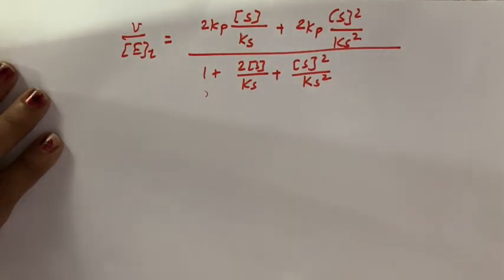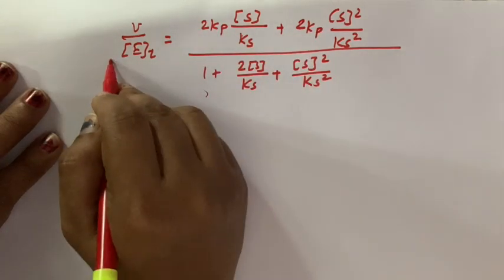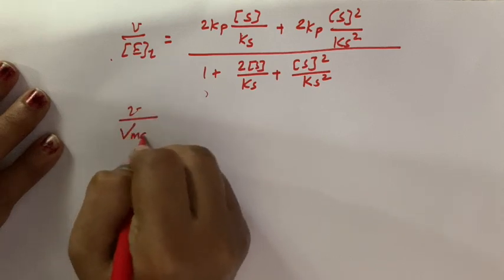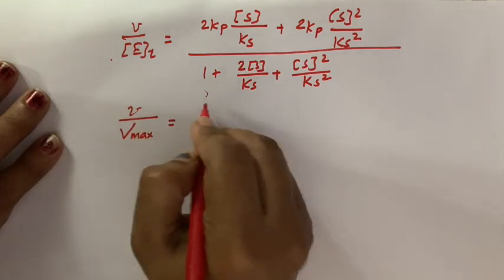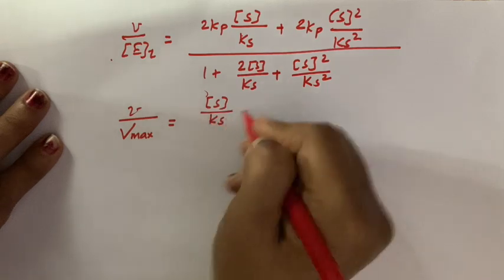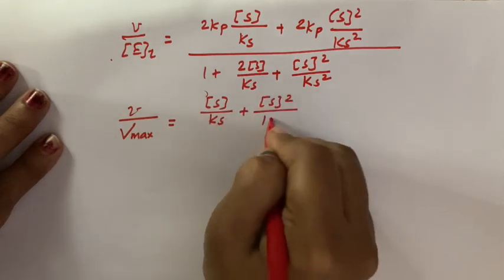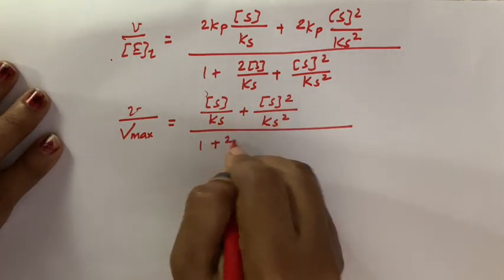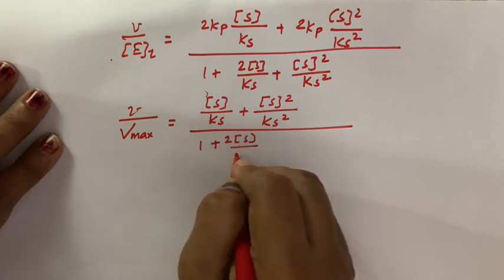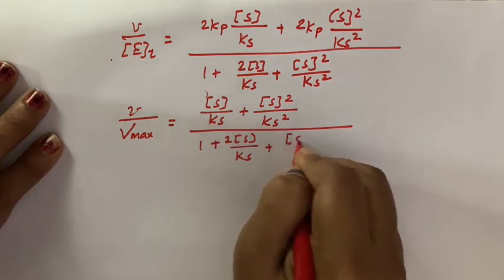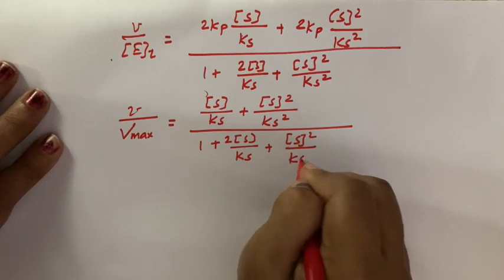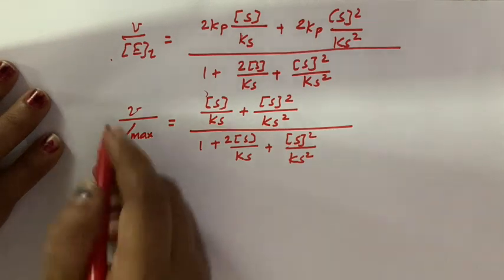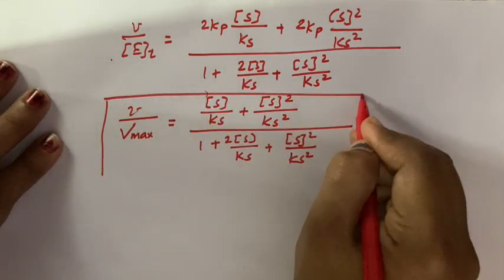When we solve this further and take 2Kp out to get Vmax, we obtain: V/Vmax = ([S]/Ks + [S]²/Ks²) / (1 + 2[S]/Ks + [S]²/Ks²). This is the equation for non-cooperative binding in a dimeric allosteric enzyme.